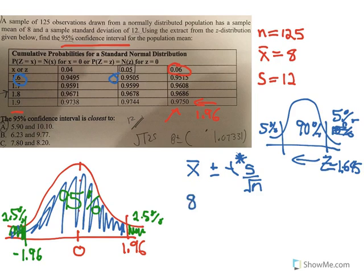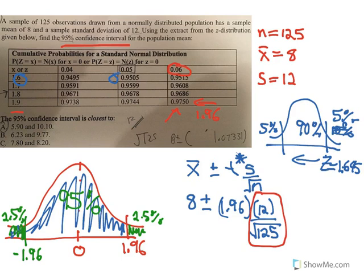X bar is, so we're going to start with our best guess of 8, plus or minus our z value that we're going to use, times the sample standard deviation of 12, divided by the square root of the sample size. And that part is called our standard error, right? The standard deviation divided by the square root of the size of the sample, that's our standard error.